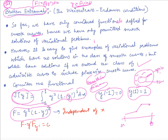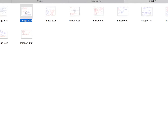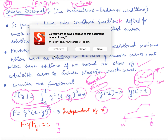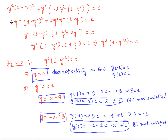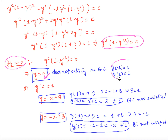Here f is independent of x, so we can use the form of Euler's equation: f - y' · f_{y'} = c. That gives us y²(1 - y'²) = c. If c = 0, then we have y² · (1 - y'²) = 0, giving y = constant. But the boundary conditions are not satisfied by y = constant.